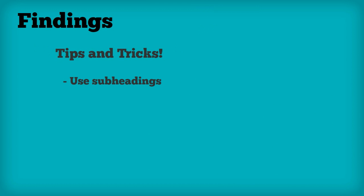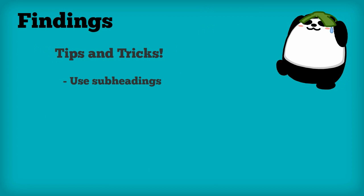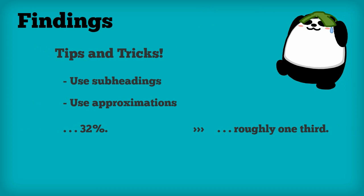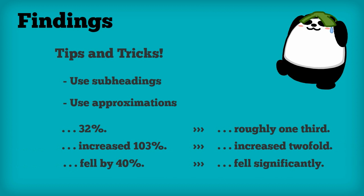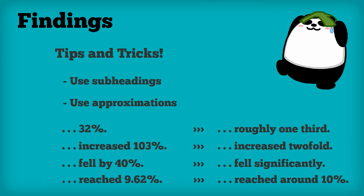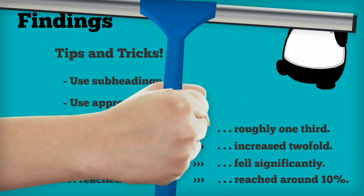Now, there are a few tricks to make our writing more interesting. We should use approximations in our findings. For example, we can say 'roughly one-third' instead of '32%'. This will also make our discussion of the data easier to understand and make sure our audience doesn't misunderstand us.